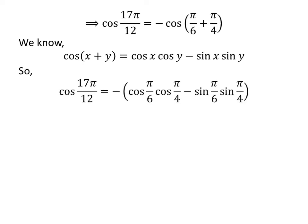We know the identity cosine of (x + y) = cosine(x)·cosine(y) − sine(x)·sine(y). Application of this identity gives us cosine of 17π/12 is equal to minus of [cosine(π/6)·cosine(π/4) minus sine(π/6)·sine(π/4)].